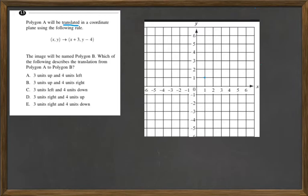And from there, it says the image will be named polygon B. Which of the following describes the translation from polygon A to polygon B? So let's look at the directions we're going.